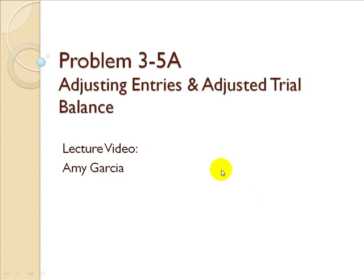Problem 3-5A: Adjusting Entries and Adjusted Trial Balance. In Chapter 2, you learned about journal entries, debits and credits, posting to ledgers, and the unadjusted trial balance. In Chapter 3, you learned about adjusting entries and the adjusted trial balance. So let's take a look at Problem 3-5A.